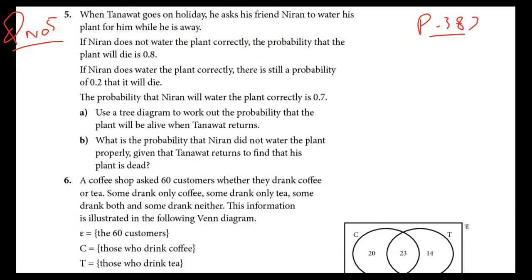When Tasnova goes on holiday, he asks his friend Niran to water his plant while he is away. If Niran does not water the plant correctly, the probability that the plant will die is 0.8.